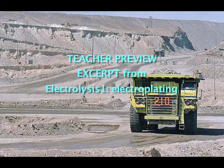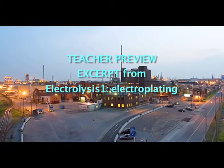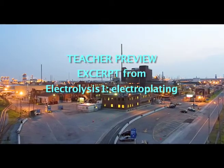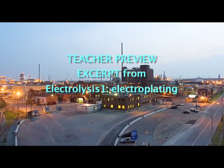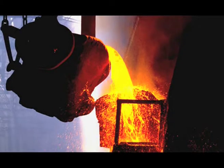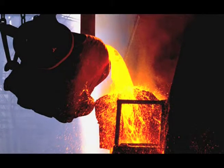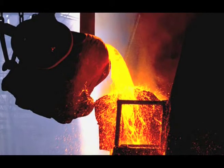When copper ore is mined, there's the usual problem of separating the metal from all the other material in the ore. Smelting produces so-called blister copper, which contains about 2% of various impurities.